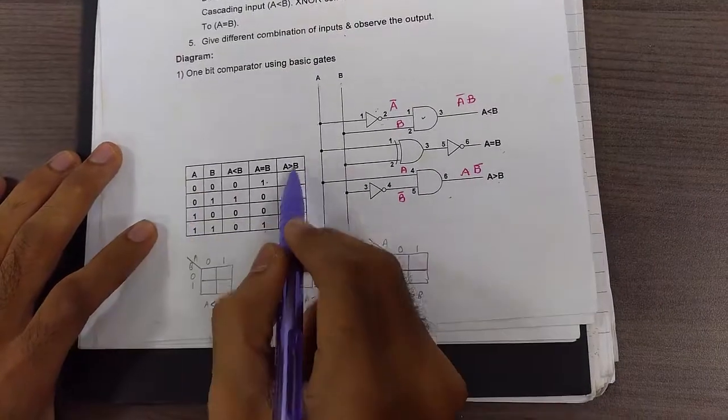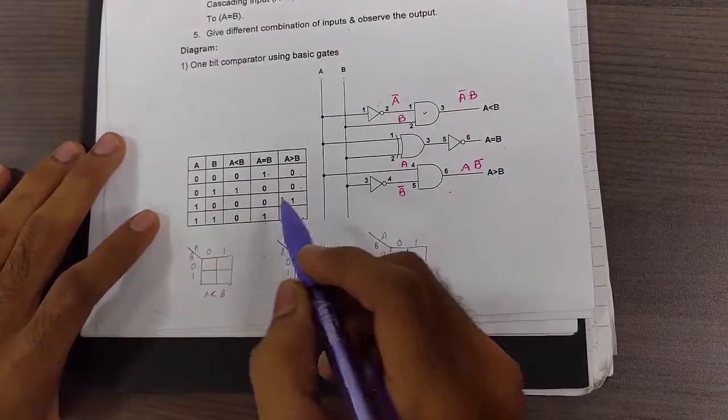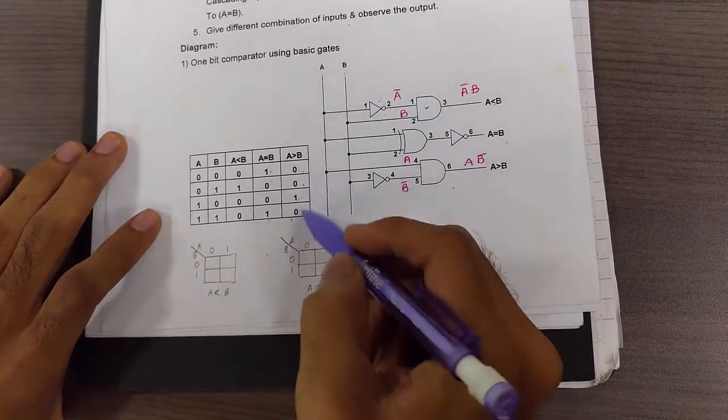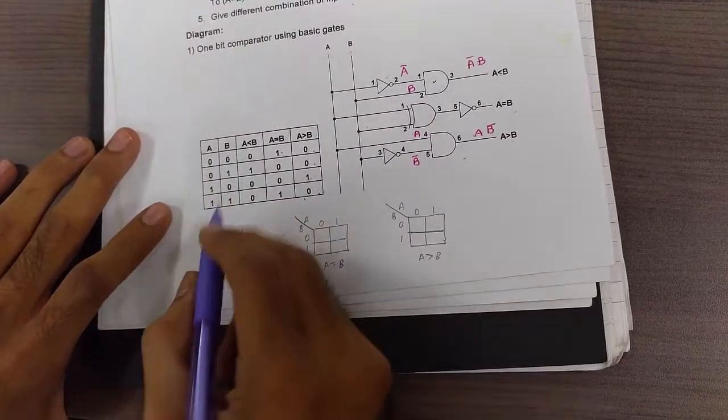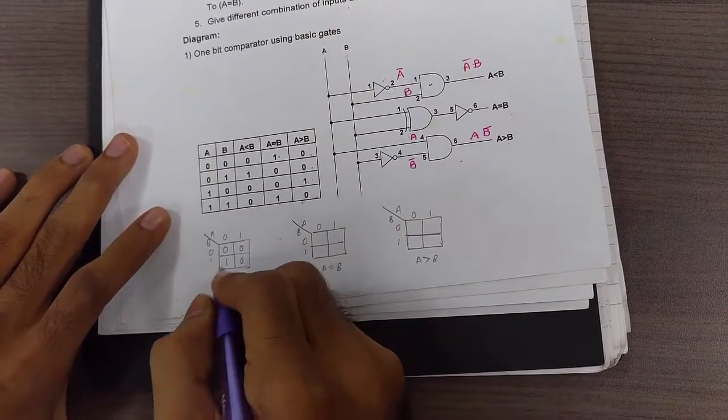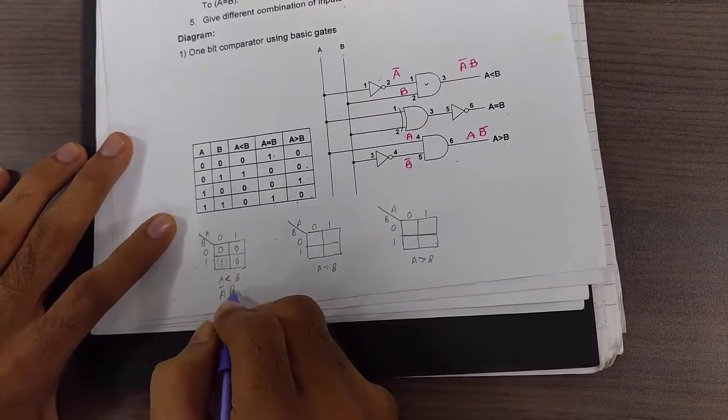So this is the truth table for 1-bit comparator using basic gates. So let's just write the K-map for if A is less than B, if A is equal to B, and if A is greater than B. If you carefully look at this K-map, you get the equation as A bar B.